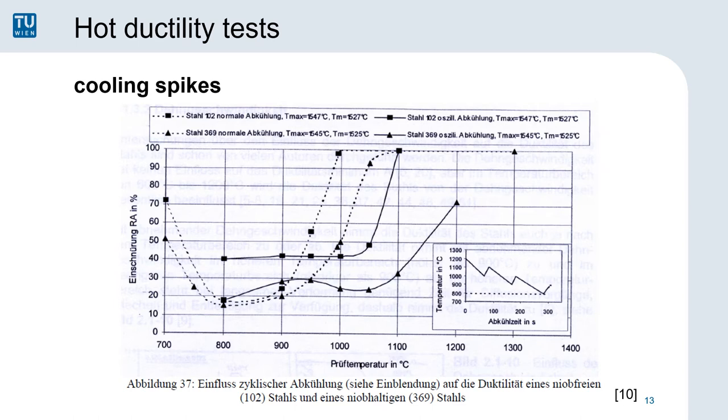Here is another example, this time taken from the literature. They are comparing a normal and a niobium alloyed steel using linear cooling as well as oscillating cooling. The solid lines follow the oscillating cooling and the dashed lines are cooled linearly. The spikes increase the ductility at medium temperatures, especially for the non-alloyed steel, but at high temperatures the ductility is decreased dramatically, especially for the niobium content steel.